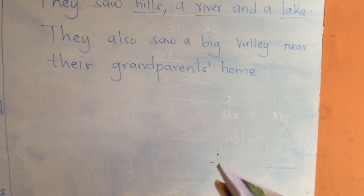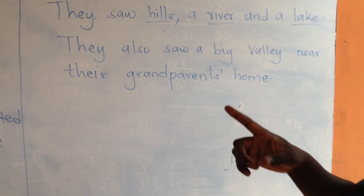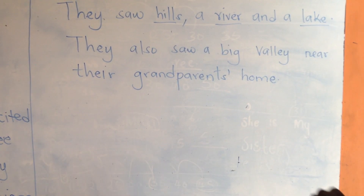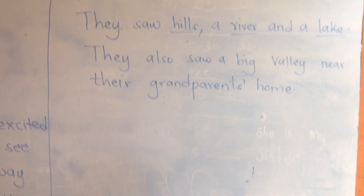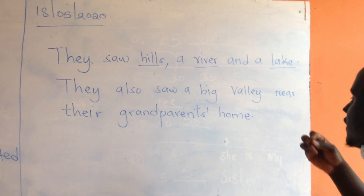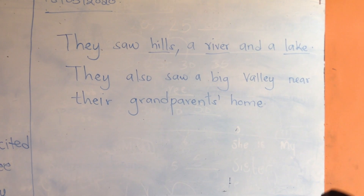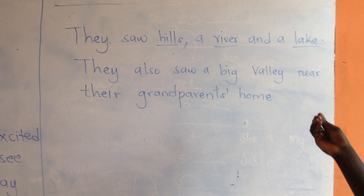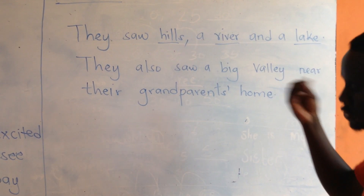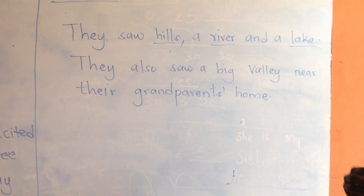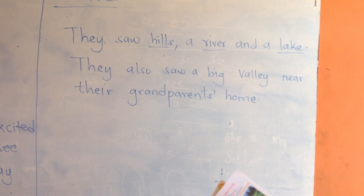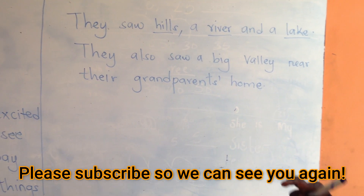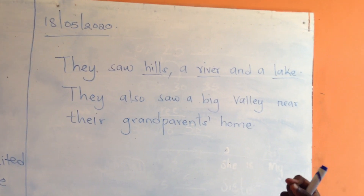Kids, from our story, you are going to write down for me the things that Jerry and Hilda saw on their way to their grandparents' home. Another thing I want you to do is imagine that you are traveling to your grandparents' home, and think about the physical features you have seen before on your way there. And after doing that, you are going to draw two things from the story that you have ever seen before — we have hills, rivers, a lake, and a valley — so choose two things from the story to draw.